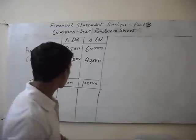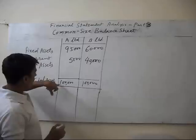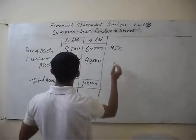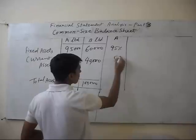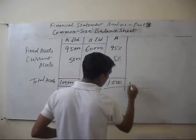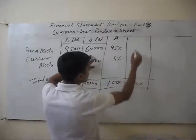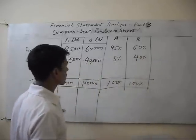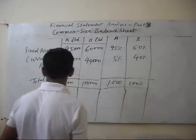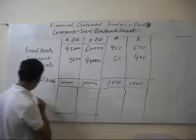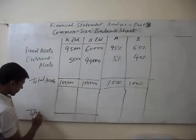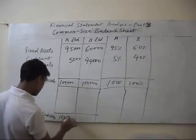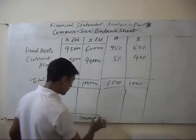If we calculate the percentage by dividing by 1 lakh into 100, then in Company A's case it is 95% fixed asset and 5% current asset, totaling 100%. In Company B's case, 60% is fixed asset and 40% is current asset, also totaling 100%. This is exactly 50% of the 100,000.